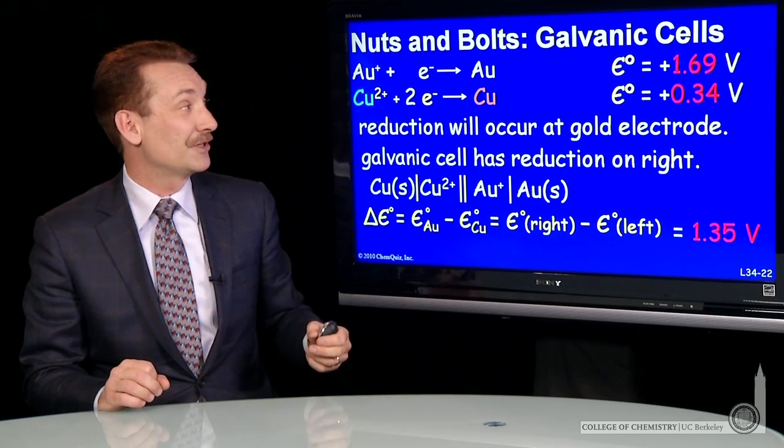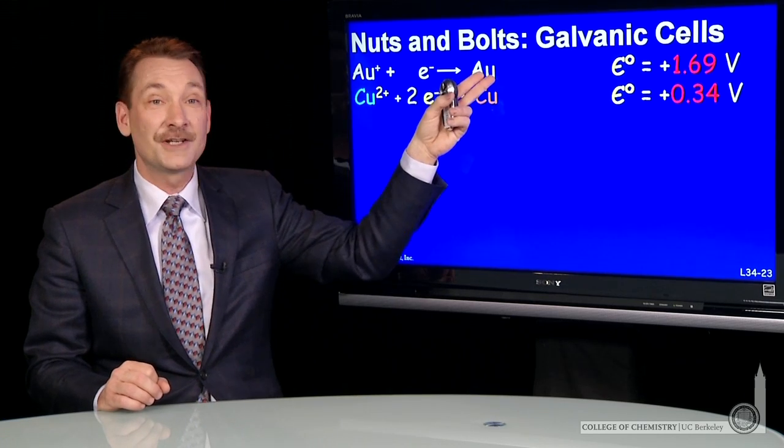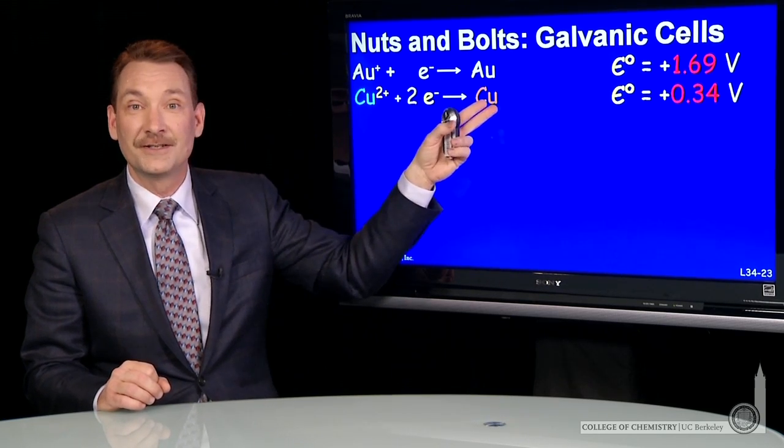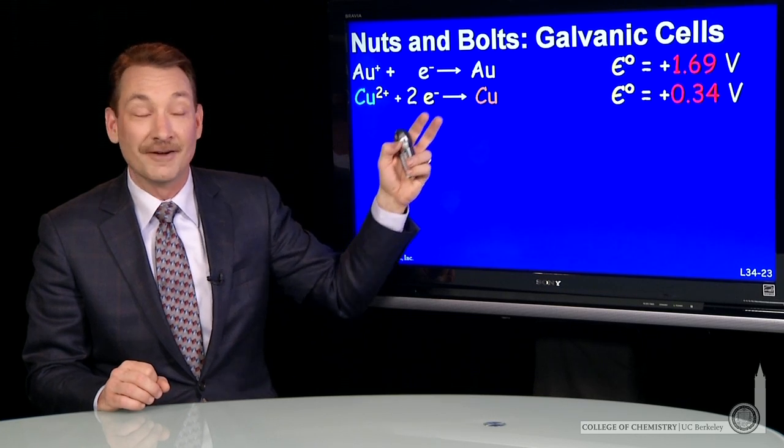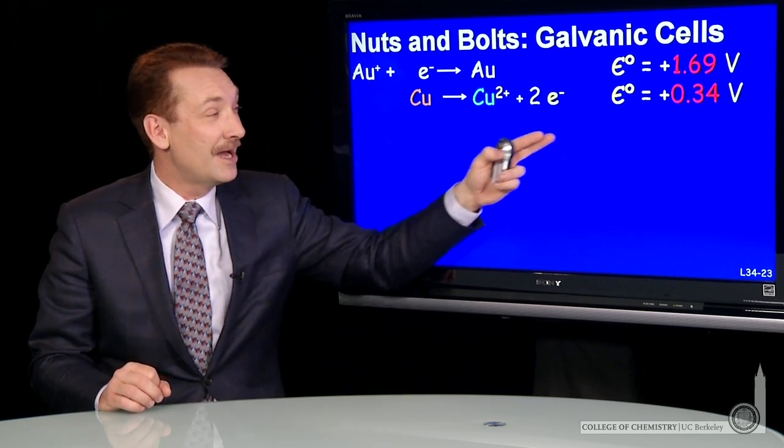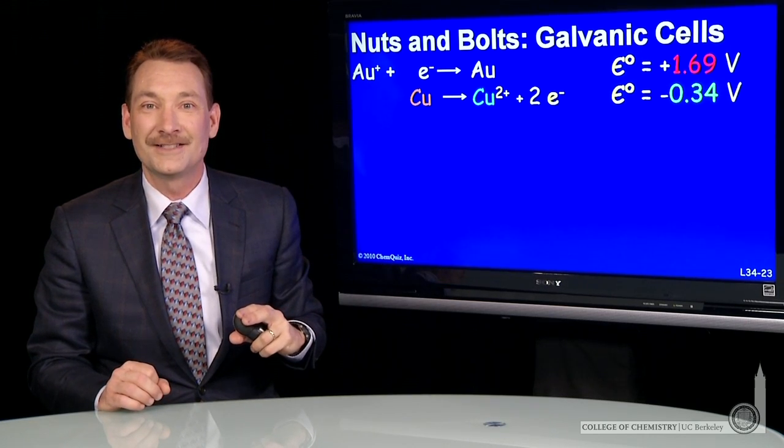When I look at the overall chemical reaction, the gold is going to be reduced. The copper oxidized. So let's reverse this reduction that I have. And when I reverse that and write it as an oxidation, I need to reverse the sign on my standard potential.